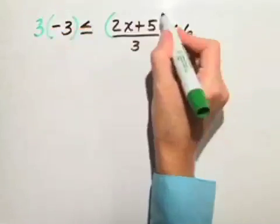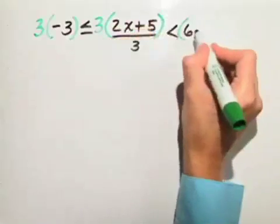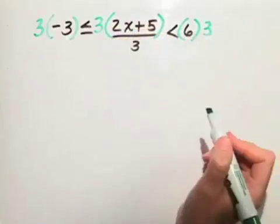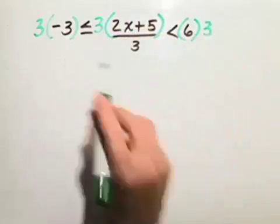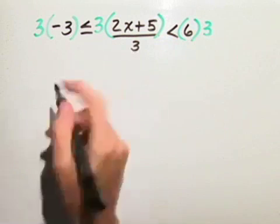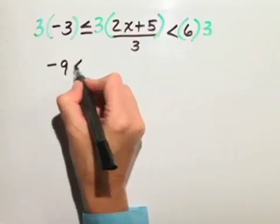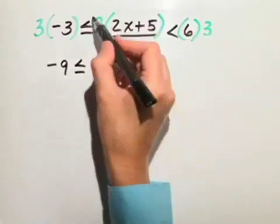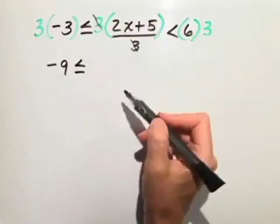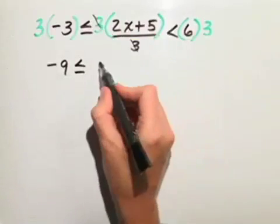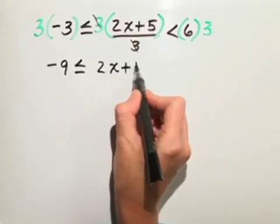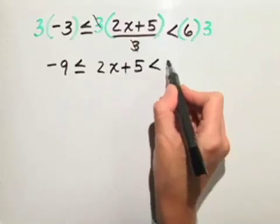Multiplying all three parts by 3, we end up with negative 9 is less than or equal to 2x plus 5, which is less than 18. Notice the 3 and 3 divide out and give us 1, so we just have 2x plus 5 in the middle part.